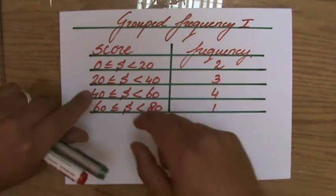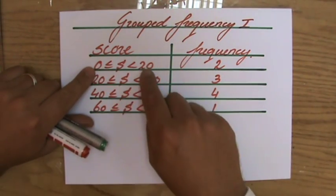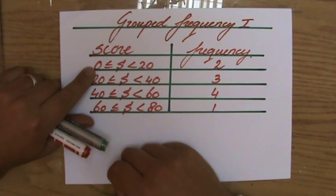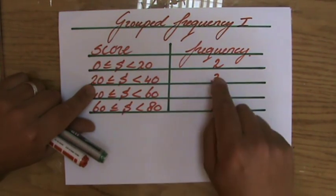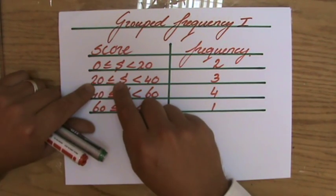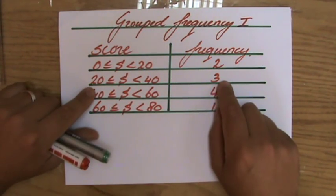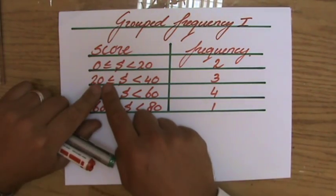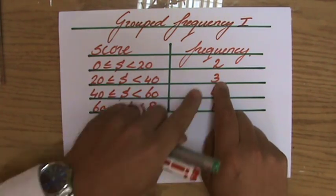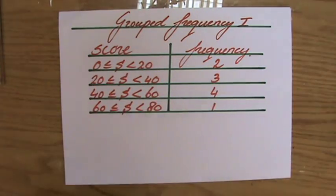The only thing I know is that between a score between 0 and 20, two people are in that group. Between 20 and 40, three people. But I don't know if those people have a 30, a 39, and a 38 as a score. Or perhaps a 21, a 23, and a 32. The only thing I know is that three people belong to that group.